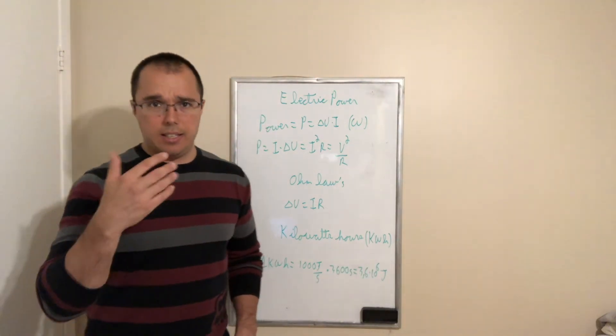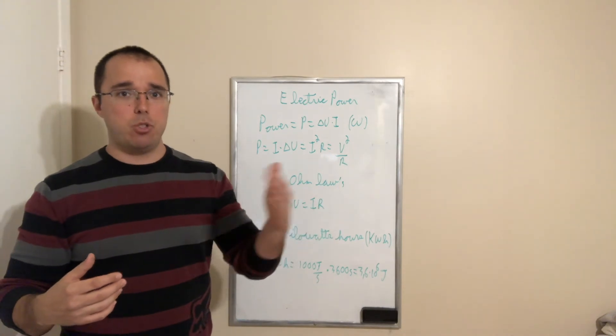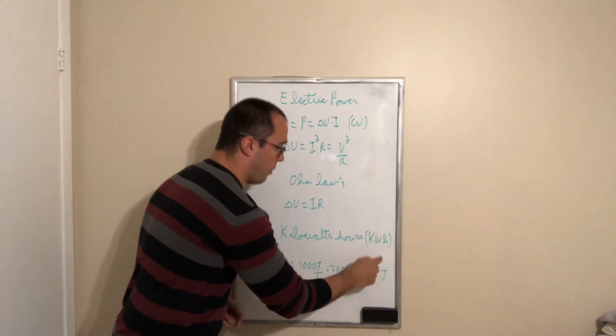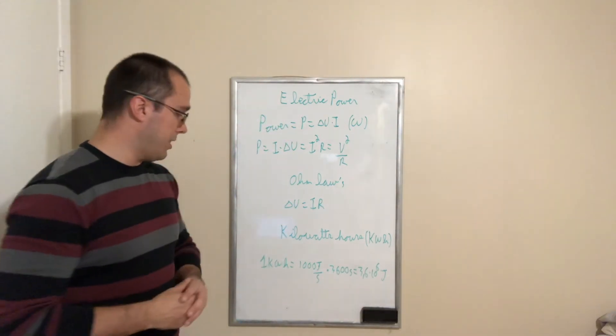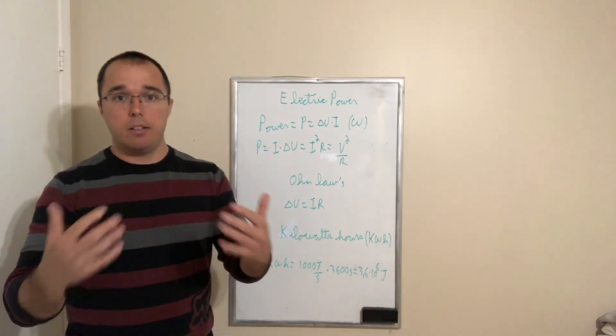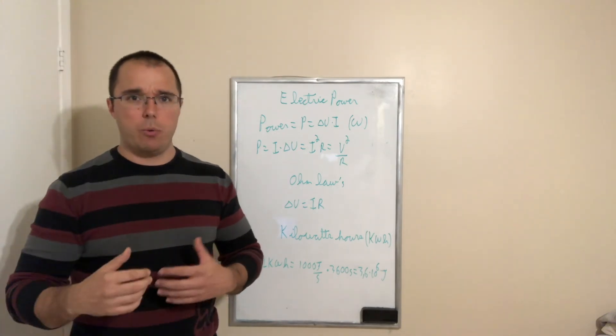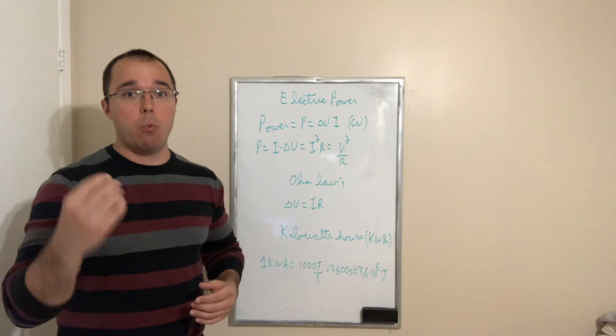So in Quebec, when you're charged 5.5 cents per kilowatt hour, every time you consume 3.6 multiplied by 10 to the power 6 joules, you are charged 5.5 cents. So that's a convenient measure to bill electrical power. And in some questions, we're going to ask, what is the amount of kilowatt hour that was used?